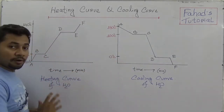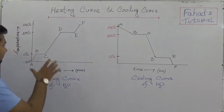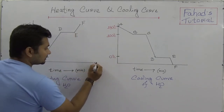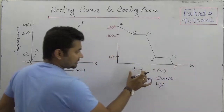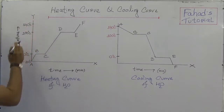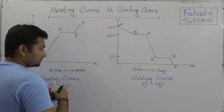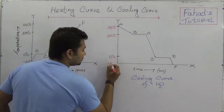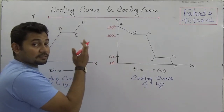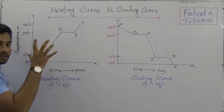Here I have written the heating curve of water and this is the cooling curve of water. To understand it, you'll see that there is a graph: on the x-axis in both cases we put time in minutes, and on the y-axis we put temperature in degree Celsius. So on the y-axis, this value here is minus 20 degree Celsius. Looking at this picture first — what do you understand?